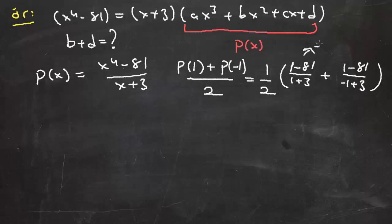Bu ifade -20, bu ifade ise -40. Doğal olarak buradan biz ne elde edeceğiz? -60/2'den -30 elde edeceğiz. Bu ifade tekrar belirtmek gerekirse çift dereceli terimlerin katsayıları toplamı, yani burada çift dereceli terimlerin katsayıları b ve d. b + d neymiş? b + d = -30 imiş.